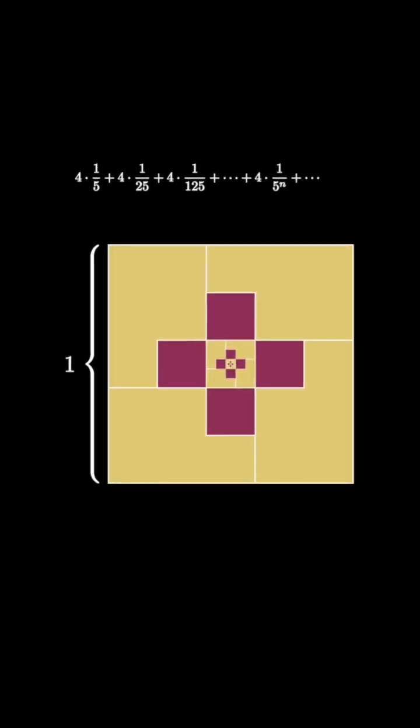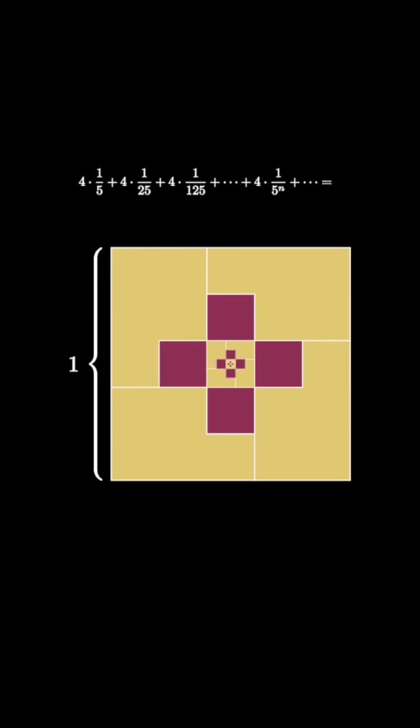In the limit, the shaded area will equal the area of the square, and that means the infinite sum, which is the limit, is equal to the area of the square, which is 1.